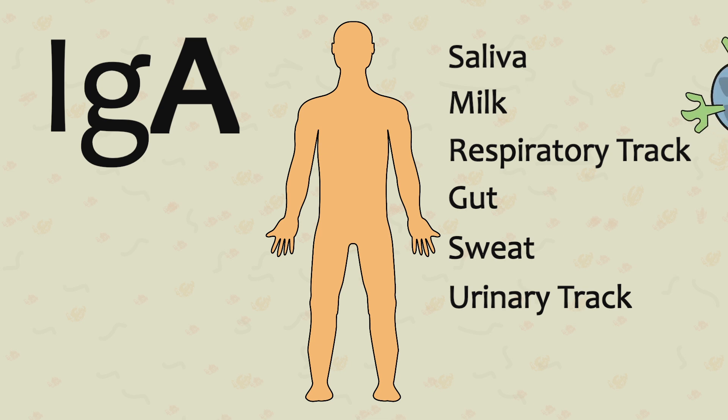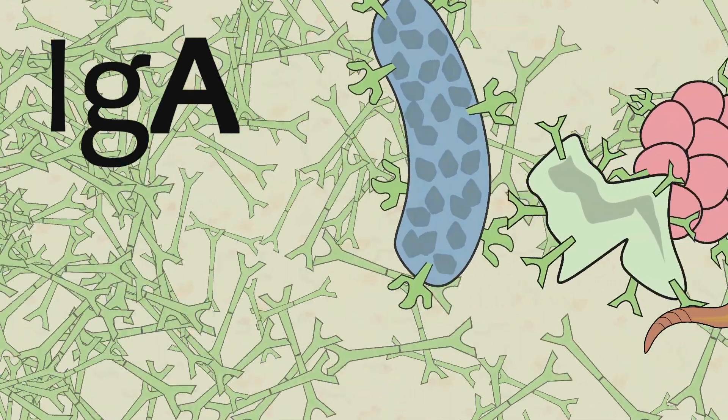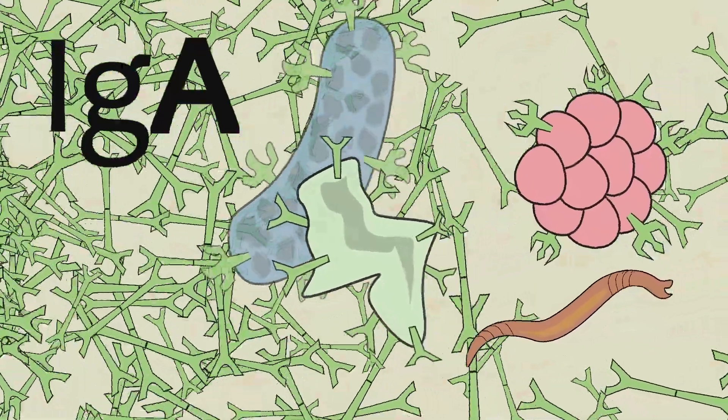IgA's are part of our innate immune system and fight pathogens such as bacteria, viruses, fungus, and parasitic worms.